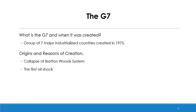This procedure led to the collapse of the international monetary system. Another important reason for the creation of the G7 is the first oil shock. In 1973, the OPEC organization imposed an oil embargo targeted at countries supporting Israel. This procedure led to a massive increase in oil prices, which sparked stagflation in many countries.